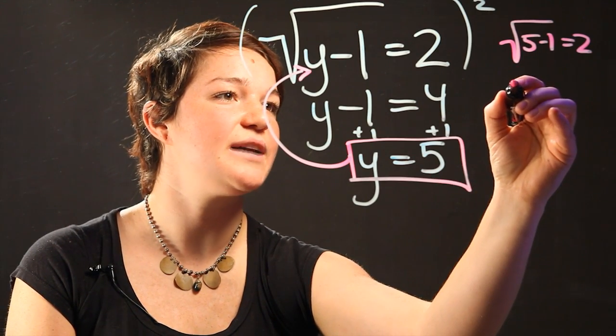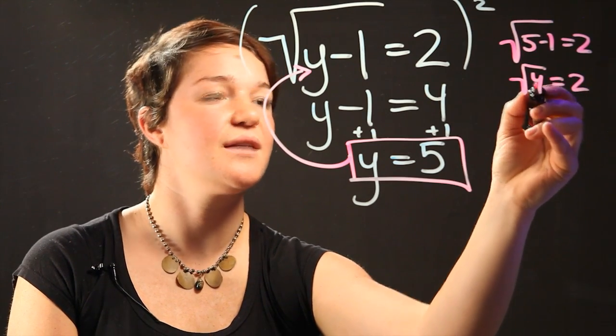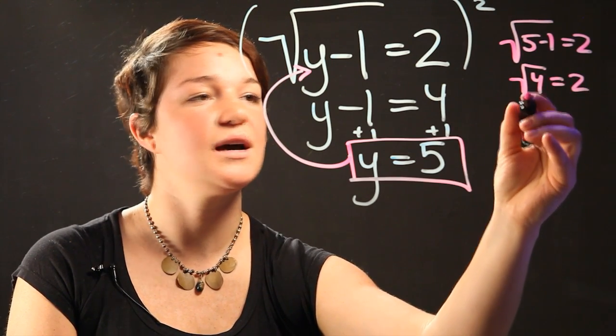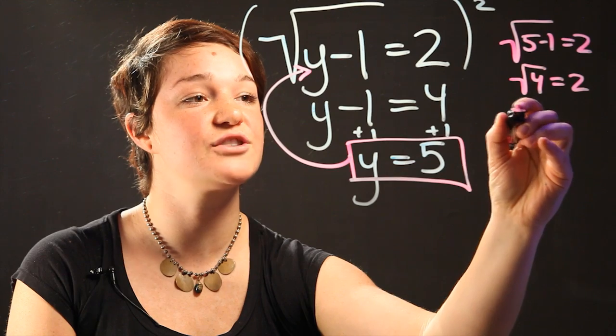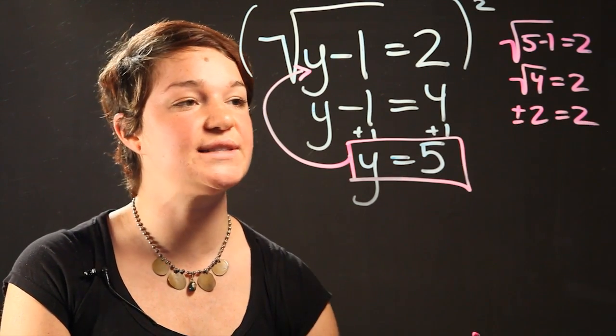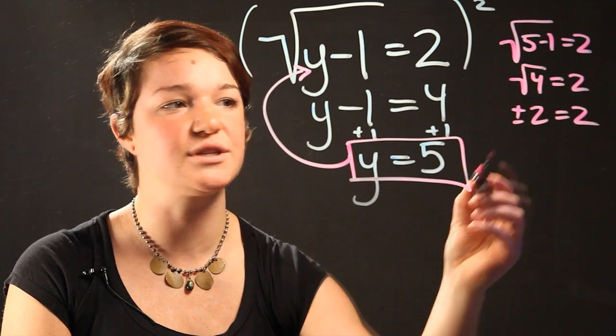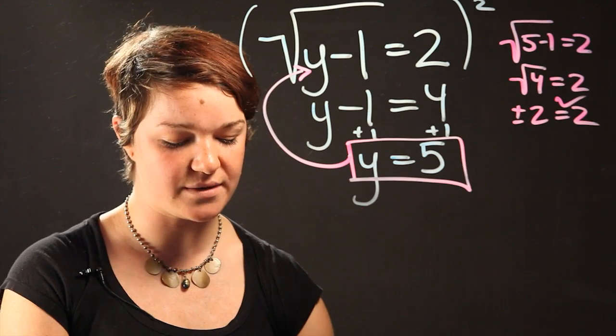So this simplifies to the radical of 4 equals 2, and the square root of 4 is actually plus or minus 2 equals 2. So because the equation is telling us that 2 is the answer, positive 2 is equal to 2. So we got the right answer.